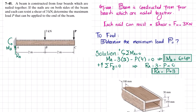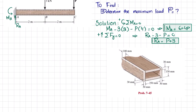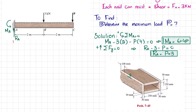Now, we know that the shear flow q equals the horizontal shear force per unit length. We have the horizontal shear force Fh and the spacing s. We also know that q equals V times Q divided by I. V is the maximum shear force, so we will draw the shear force diagram.